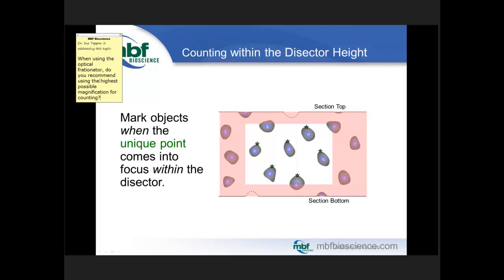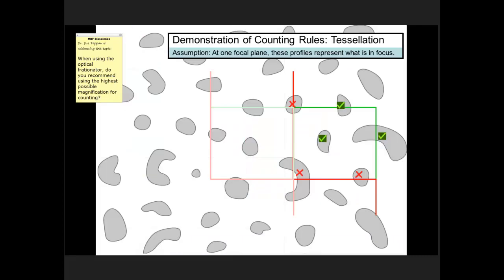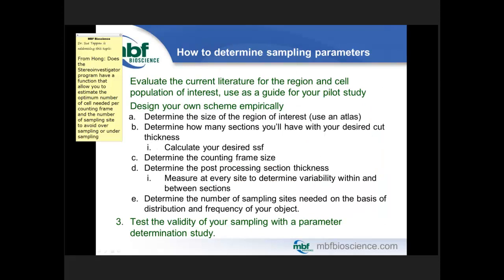Pavan asks whether the highest possible magnification is recommended for the optical fractionator — generally yes. Holm asks whether StereoInvestigator has a function to estimate the optimum number of cells per counting frame and number of sampling sites to avoid over- or under-sampling. The short answer is yes. First, evaluate the current literature as a guide for your pilot study — pay attention to whether stereology was used, the right probe, the right magnification, and what parameters were reported. You can also design your scheme empirically: use an atlas to determine how many sections you'll have at your desired cut thickness, calculate your section sampling fraction, and determine your counting frame based on object frequency and size.